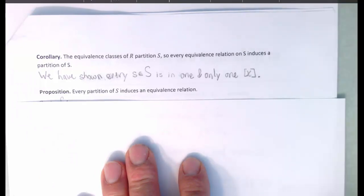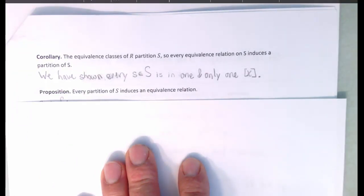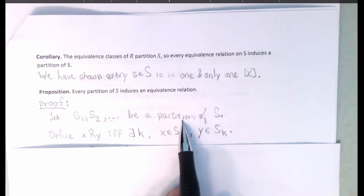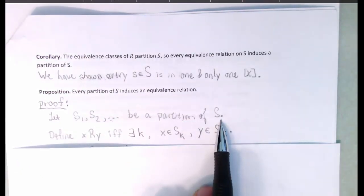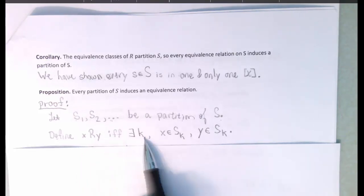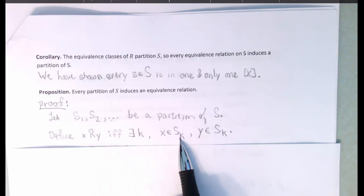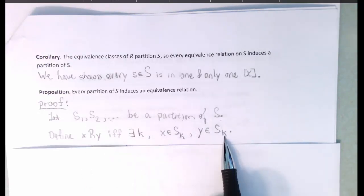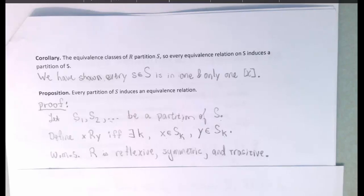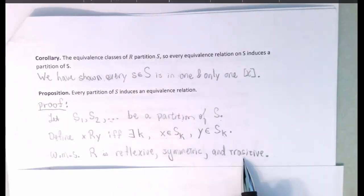Next, we want to prove that every partition of S induces an equivalence relation. Let S1, S2, etc. be some partitioning of the set S. We're going to define our equivalence relation R in the usual way: we'll say that X is related to Y if and only if there is some single subset S_K such that both X is in S_K and Y is in S_K. What we need to show is that this relation is reflexive, symmetric, and transitive.